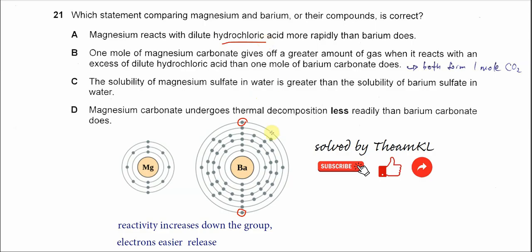So this means barium will react with HCl more rapidly, not magnesium. So A is wrong.